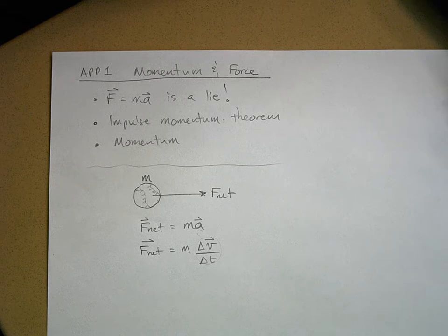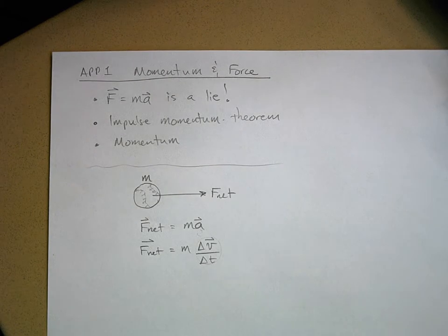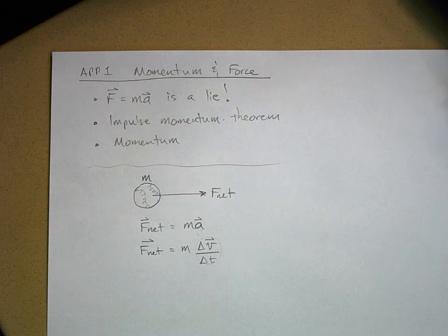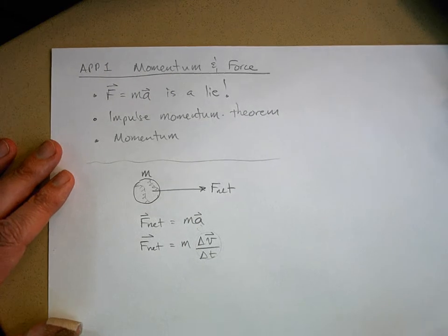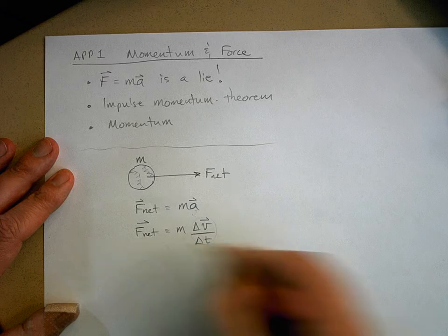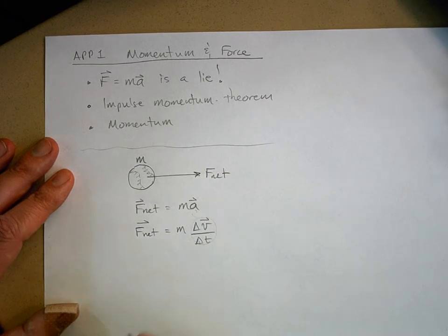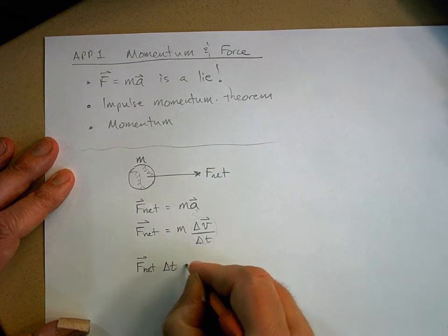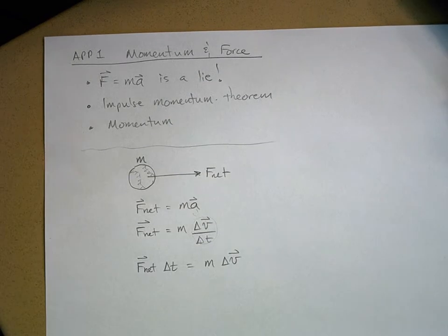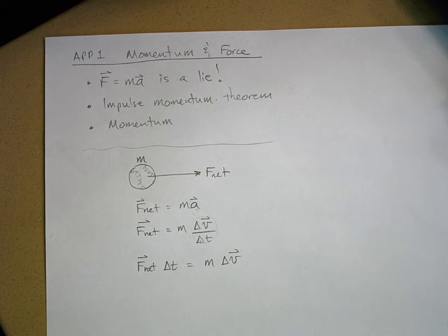I'm just going to do some algebra rearranging here - nothing complicated. The reason I'm able to do this is that the universe is mathematical. We live in a mathematical universe; nature follows those algebraic rules too. It's why the universe is comprehensible - it can be described with certain mathematical rules. So I'm just going to multiply both sides by the change in time: the net force times change in time equals mass times change in velocity.